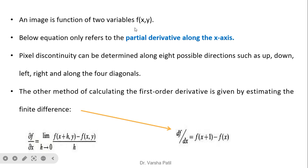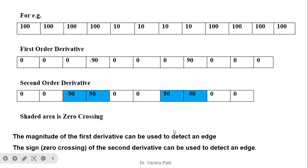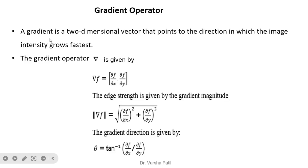An image is a function of two variables f(x, y). The partial derivative along the x-axis is computed using finite differences. Pixel continuity can be determined along eight possible directions: up, down, left, right, and the four diagonals. The first order derivative is estimated as: ∂f/∂x = f(x+1, y) − f(x, y), where h equals 1, meaning we take the difference between adjacent values.